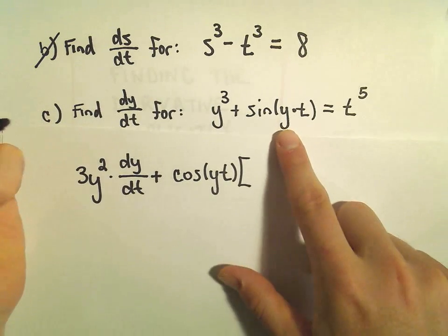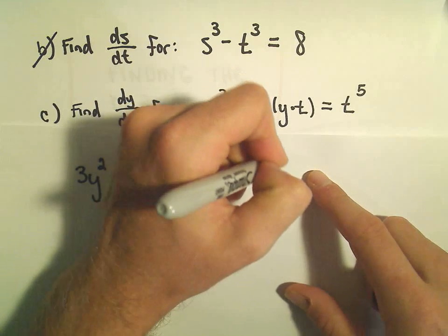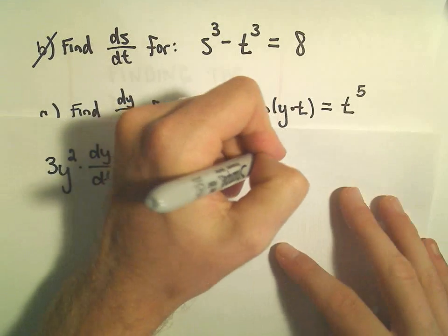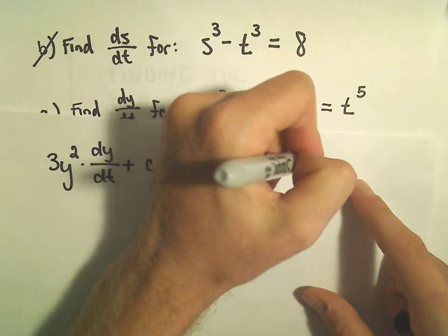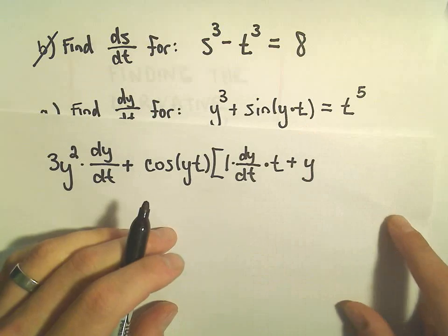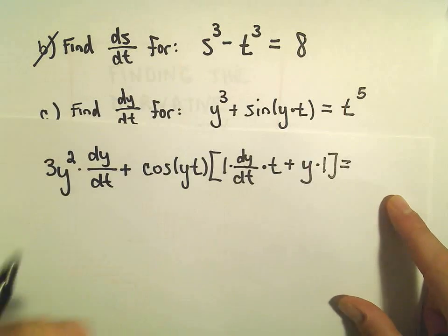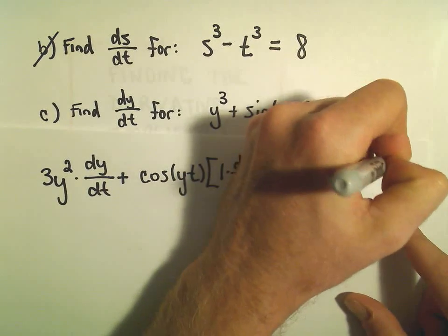So let's see. When we take the derivative of 1y, we'll just get 1, but we have to tack on the dy dt term, and then we'll leave the t alone. And then plus, so now we'll leave the y alone. When we take the derivative of 1t, we'll just get 1. And then on the right side, when we take the derivative of t to the fifth, we'll get 5t to the fourth.